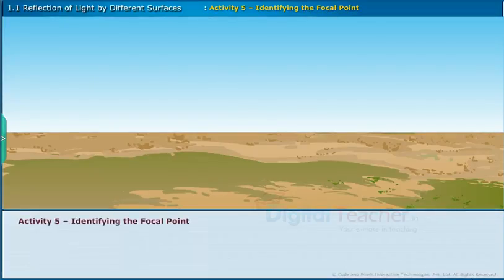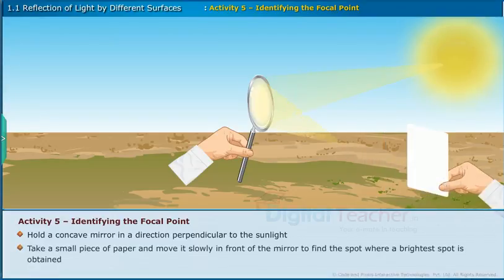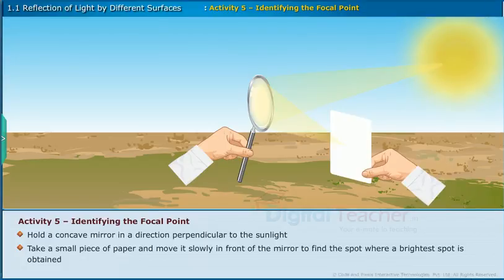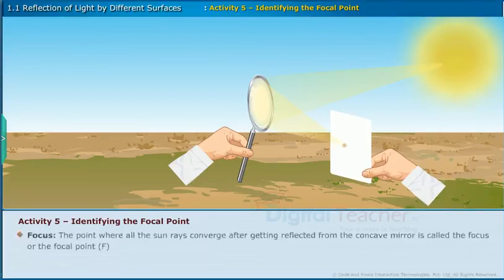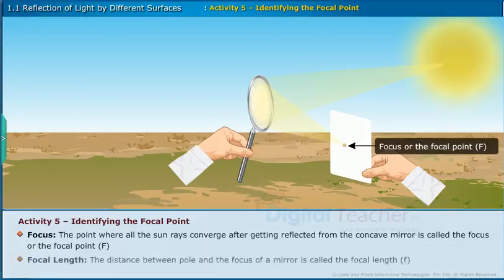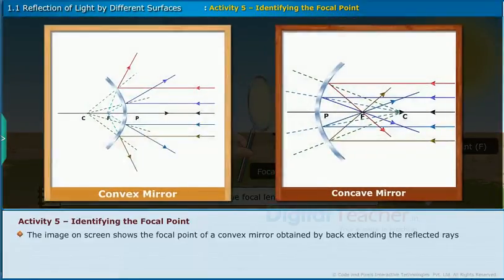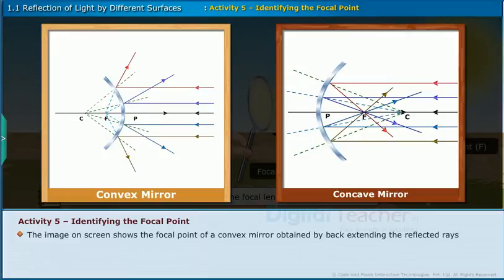Activity 5: Identifying the focal point. Hold a concave mirror in a direction perpendicular to the sunlight. Take a small piece of paper and move it slowly in front of the mirror to find the spot where the brightest spot is obtained. Focus: the point where all the sun rays converge after getting reflected from the concave mirror is called the focus or focal point F. Focal length: the distance between the pole and the focus of a mirror is called the focal length f. Note: the radius of curvature is twice the focal length, that is R equals 2f. The focal point of a convex mirror is obtained by back-extending the reflected rays.